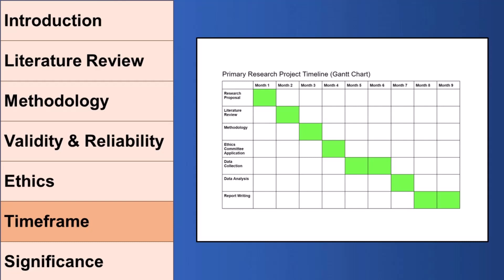Next up, you'll do a time frame section. This is a really easy section — you just need to map out which months or weeks you will cover which section in the study, to show the person grading your research proposal that the study is feasible within the amount of time covered and that you've thought that through. Generally, students will use a Gantt chart for that, and you can grab that Gantt chart as part of the downloadable pack in the description.